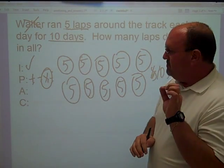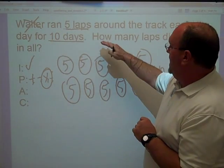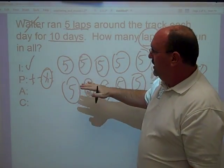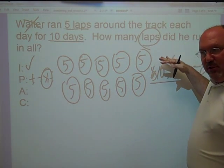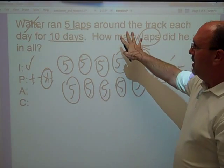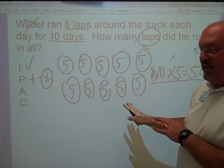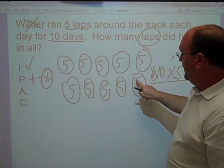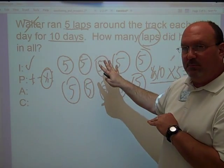But let's go back and make sure that our answer now fits with the question. How many laps did he run in all? He ran five laps each day for ten days. I set up my plan was to multiply. I did ten times five was 50. I've marked all my information. I'm pretty sure that that's correct. I could go back now and count five, ten, fifteen, twenty, twenty-five, thirty, thirty-five, forty, forty-five, fifty.